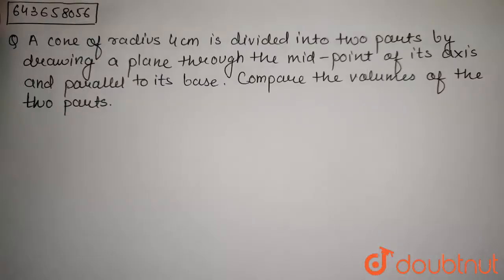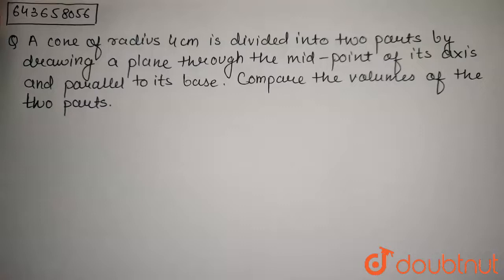The question is: a cone of radius 4 cm is divided into two parts by drawing a plane through the midpoint of its axis and parallel to its base. Compare the volumes of the two parts.